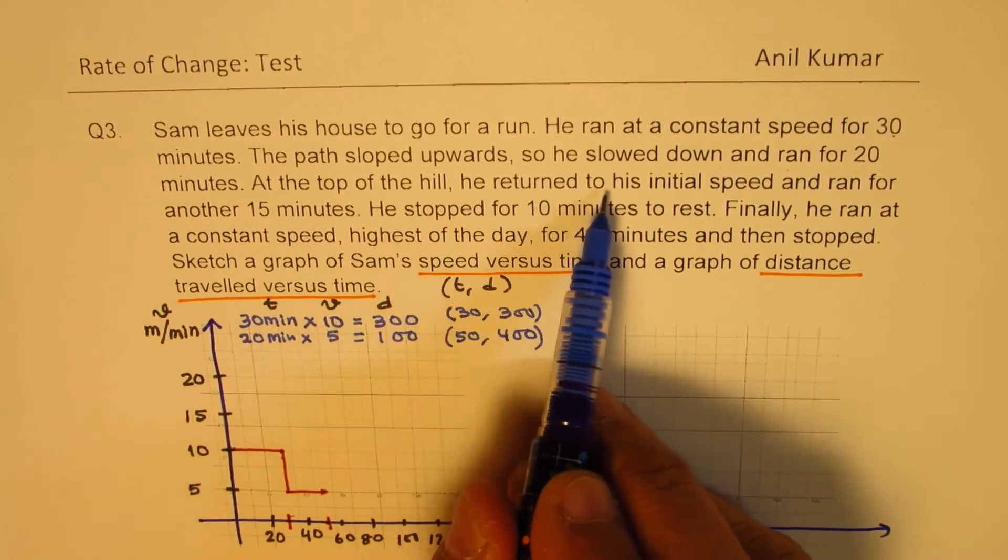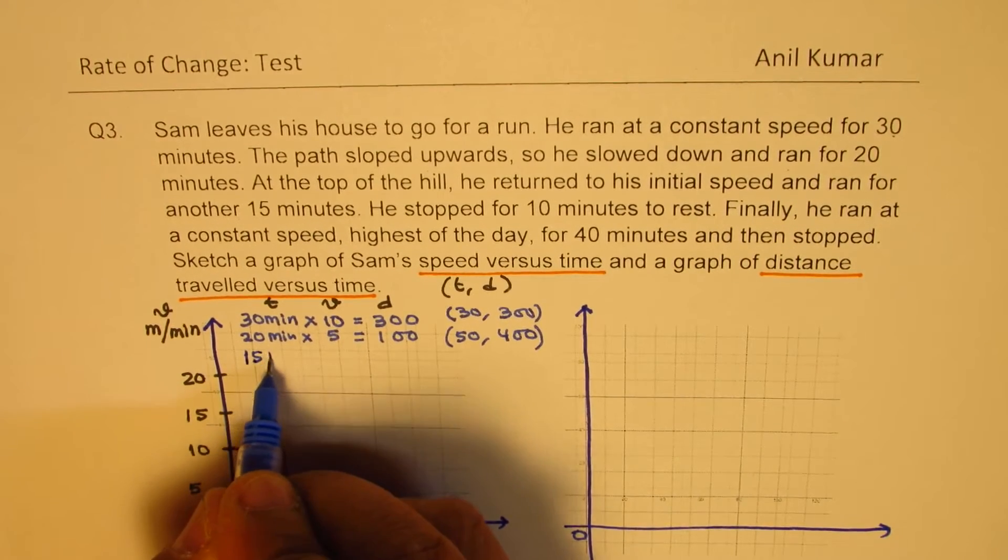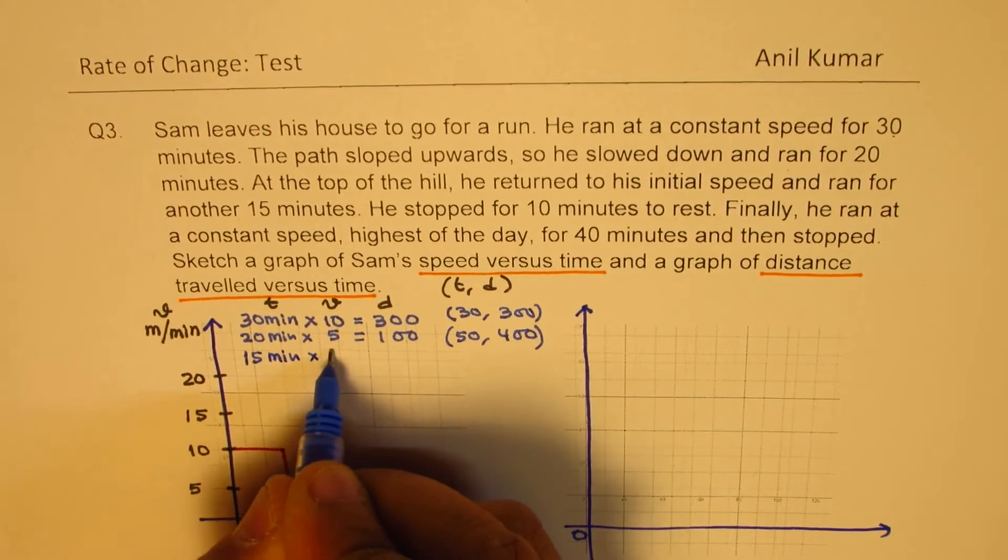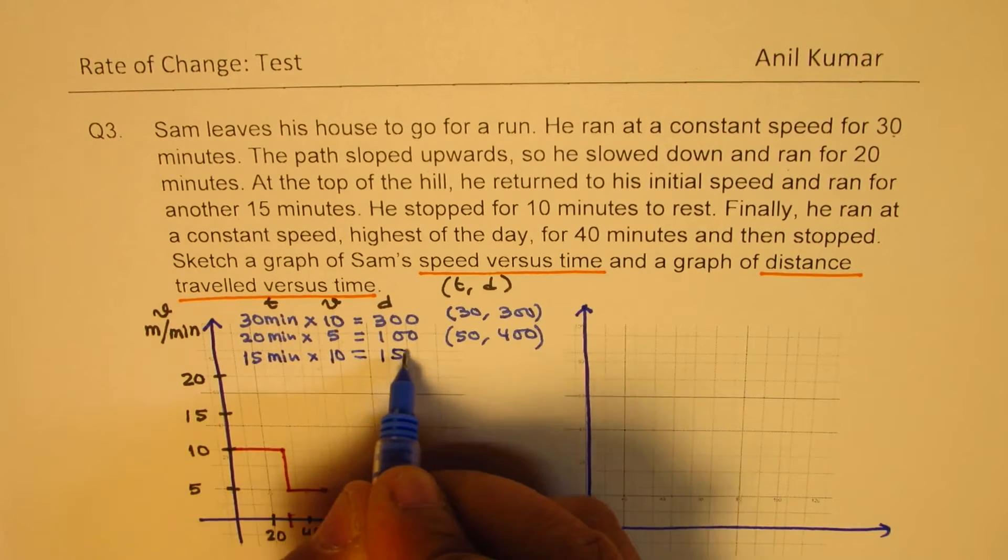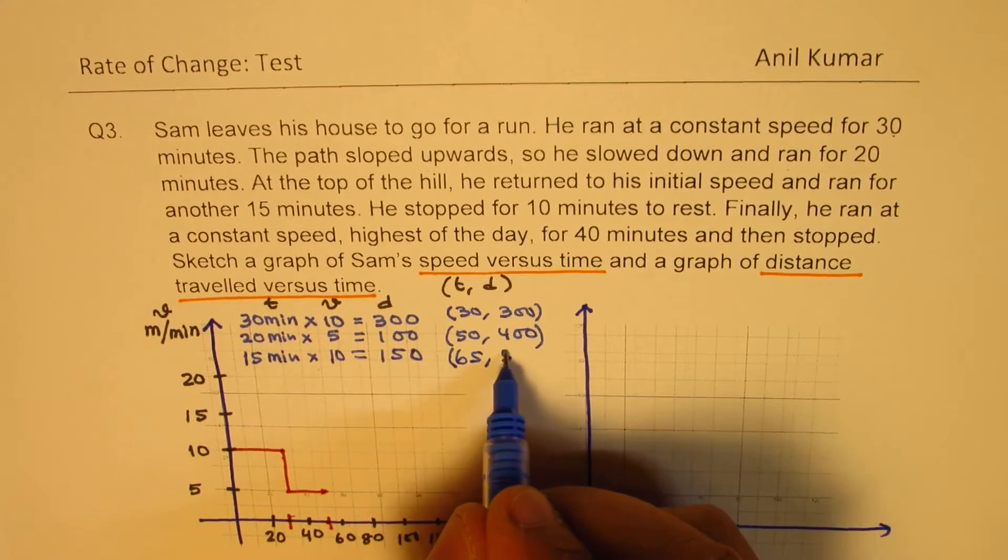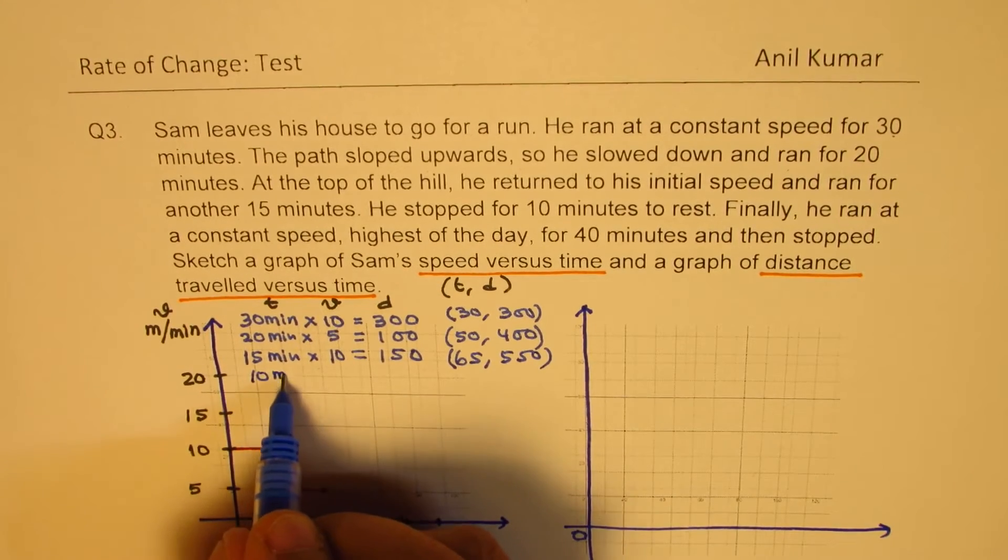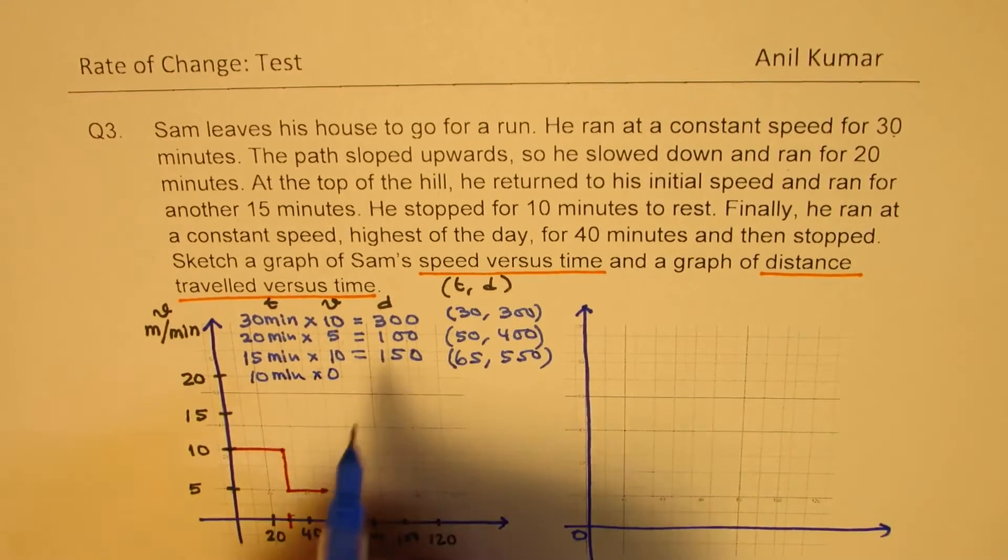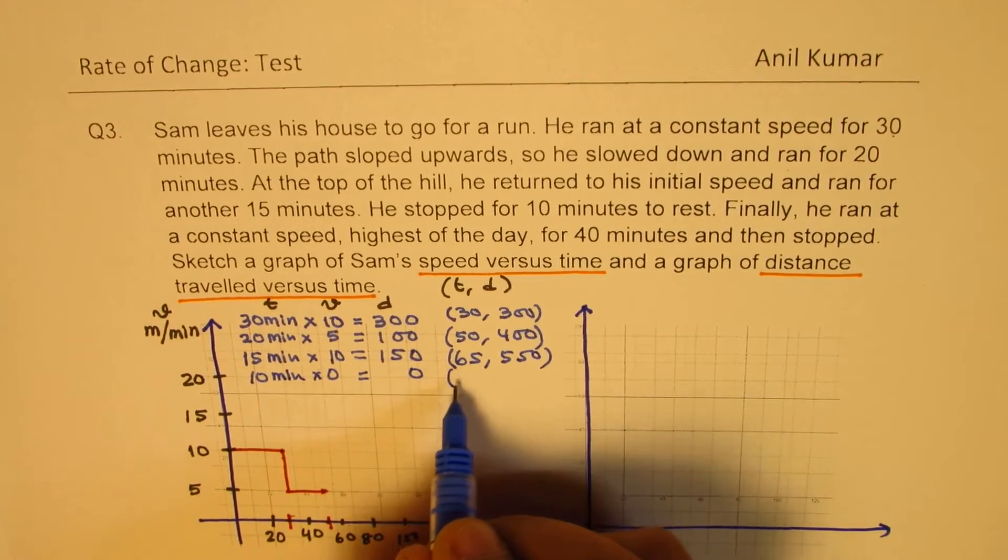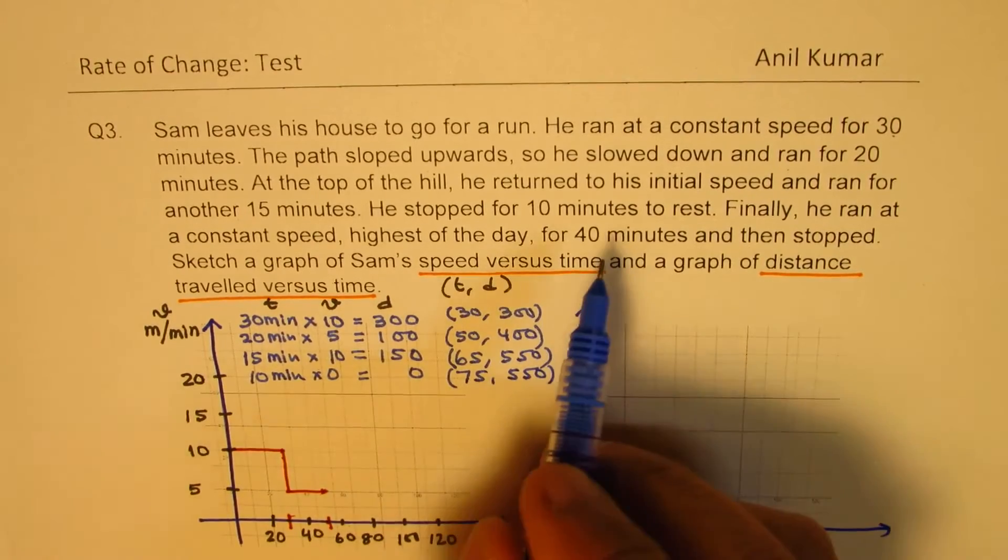At the top of the hill he returned to his initial speed and ran for 15 minutes. Then for 15 minutes initial speed is 10. So we're going to multiply this. We got 150 as a distance covered. So time is 15 more. So we can say 65 and distance is 150 more, so 550. He then stopped for 10 minutes. That means 10 minutes. Stop means 0. So that is 0. But the time went by. So 75 and 550. That is very important.